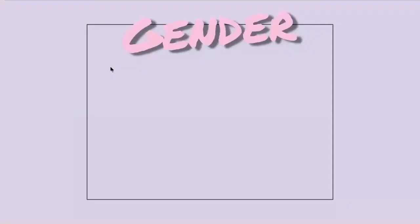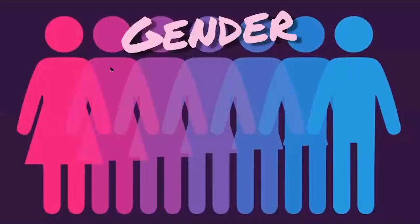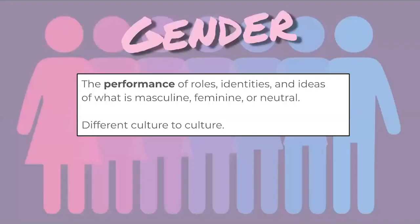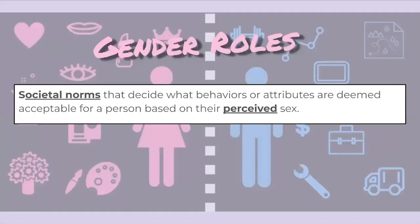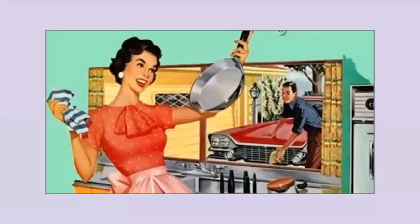Moving away from anatomical sex, we're getting into gender. Gender is basically the performance of roles, identities, and ideas of what is masculine, feminine, or neutral. Gender roles are societal norms that decide what behaviors or attributes are deemed acceptable for a person based on their perceived sex. These roles change from culture to culture — they are constructed and arbitrary, ingrained into us from a young age and pushed on us throughout our lives.